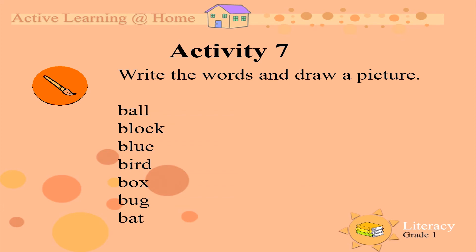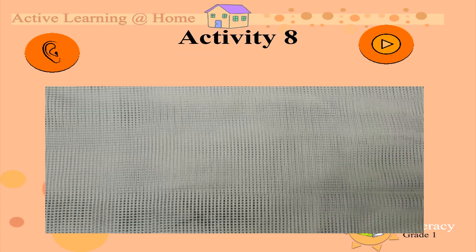Write the words and draw a picture. Do you see the words? Ball, block, blue, bird, box, bug, bat. All these words begin with B. Say them with me: ball, block, blue, bird, box, bug, bat. I need you to write those words and draw me a picture. But before you do that, come and look at a video — I made this video specially for you. Let's take a good look at it now.